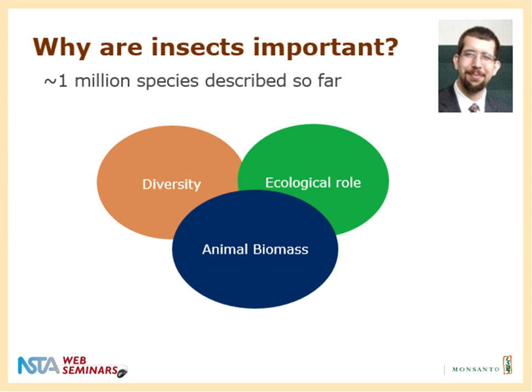Insects are some of the most common life forms on Earth, with over one million described species and making up about 95% of all animal life by biomass. There are over 30 distinct orders with countless families and subfamilies, ranging from nearly microscopic springtails in forest leaf litter to gargantuan horned beetles. They fit into nearly any ecological niche — from decomposer to pollinator, and from parasite to predator. I'll talk about some categories that interact with humans in helpful and harmful ways, hoping to give you examples you can use in your classrooms.